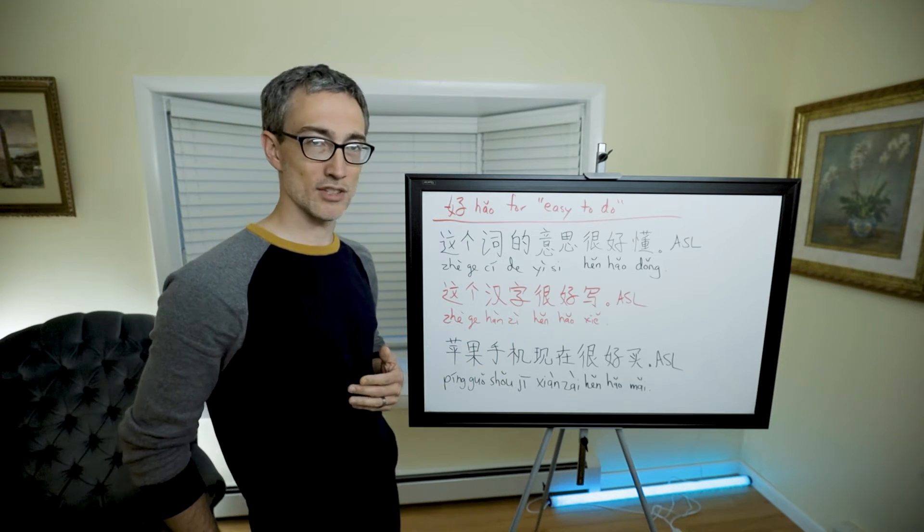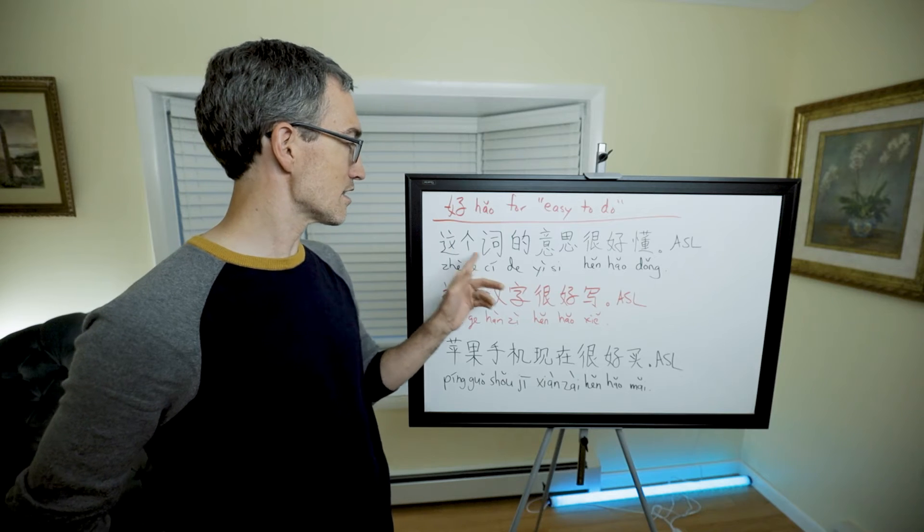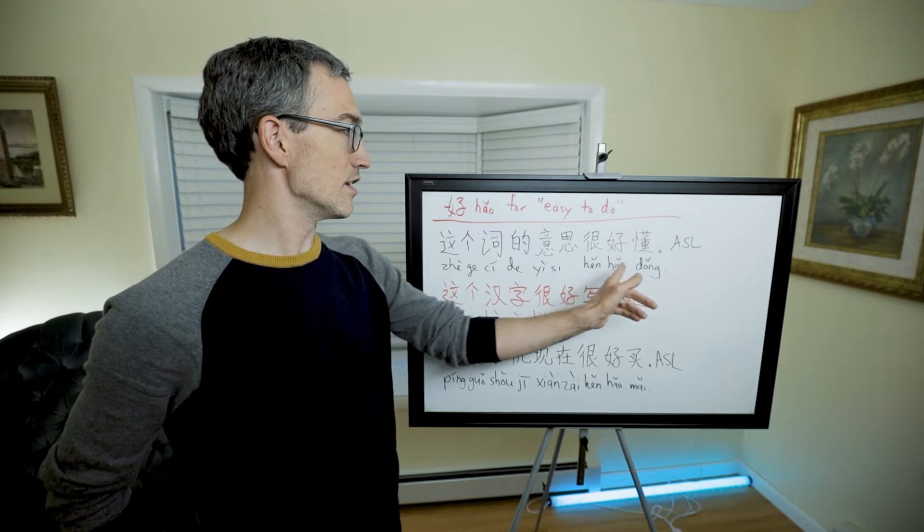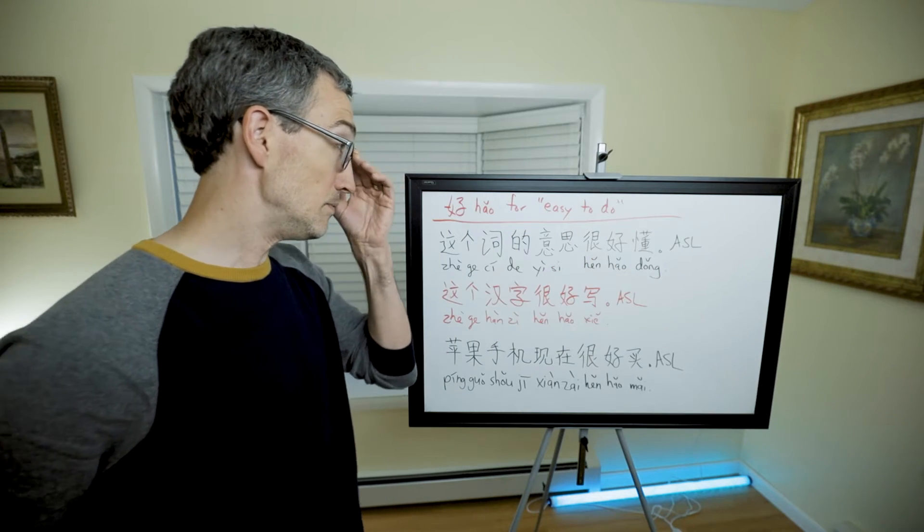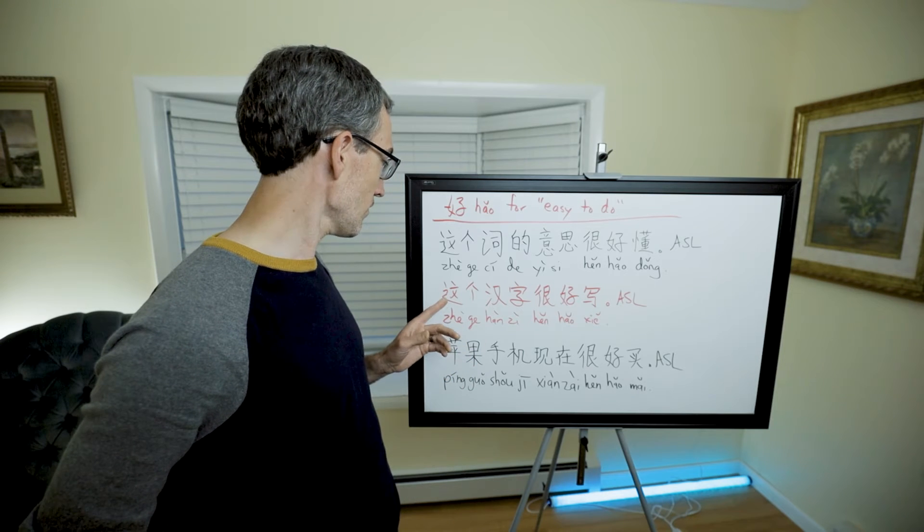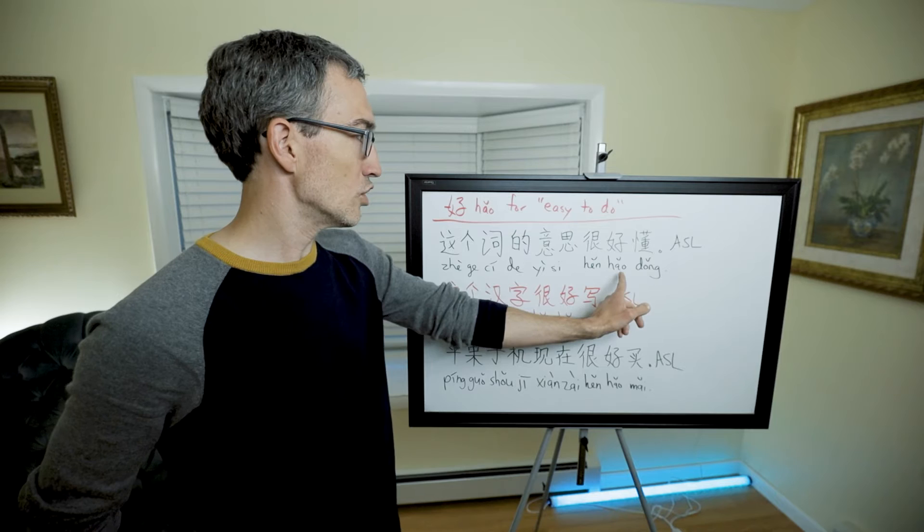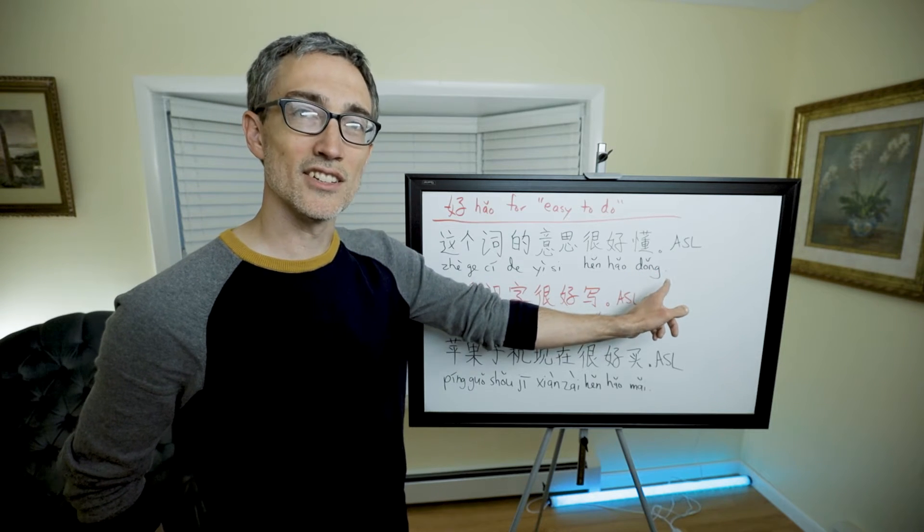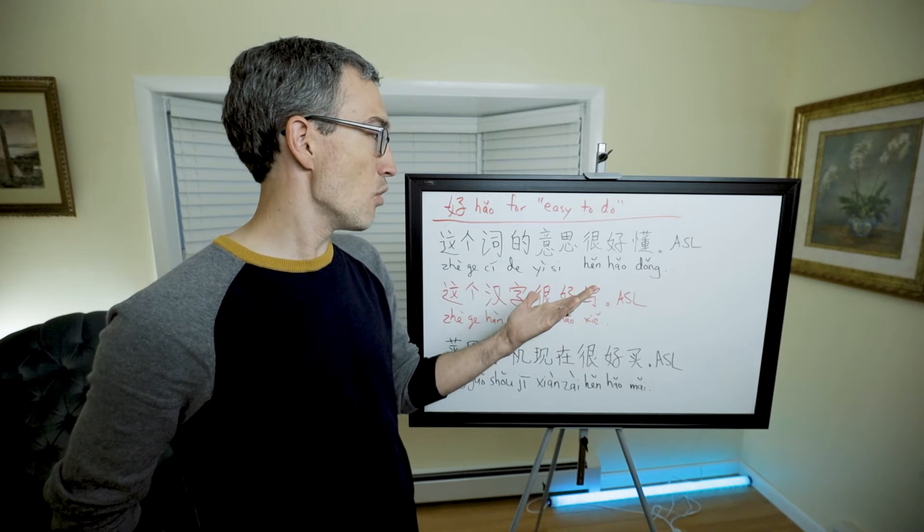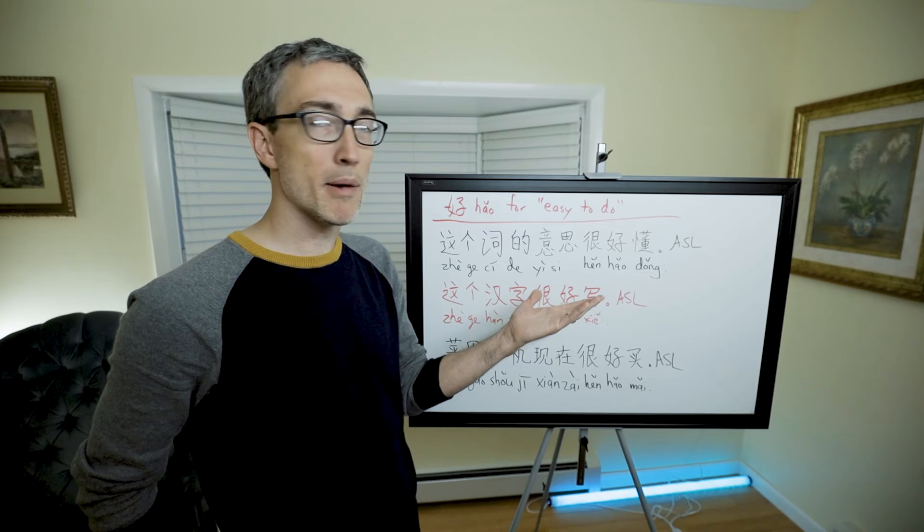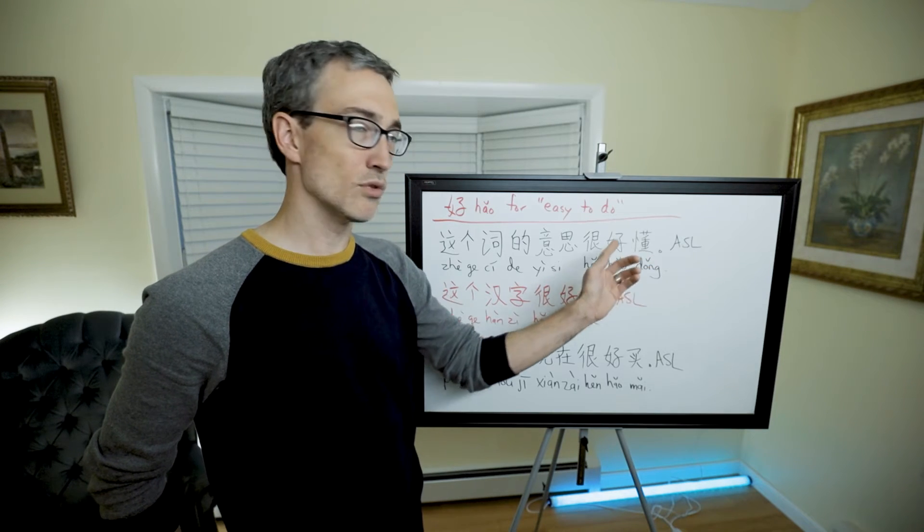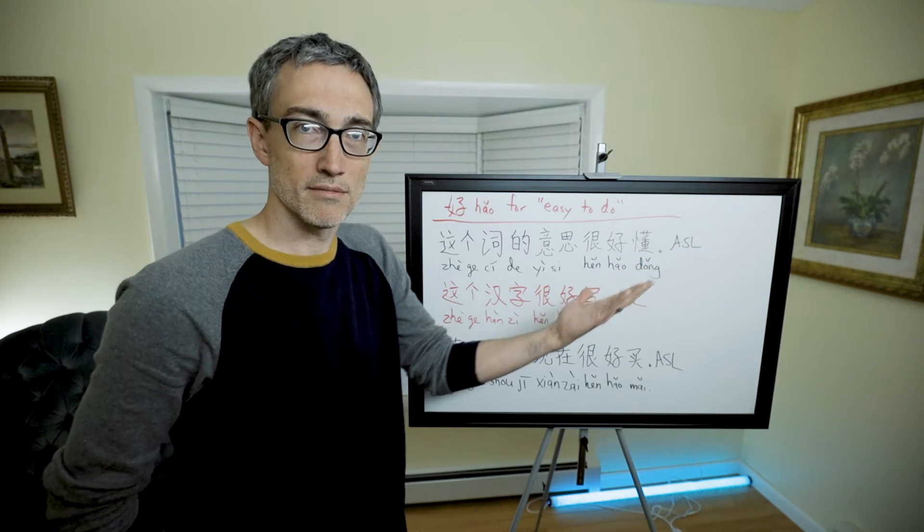Literally it's this word's meaning is very easy to understand. So 好懂 does not mean good understand, it means easy to understand. Basically the way you know that is you remember that 好 before a verb means easy to.